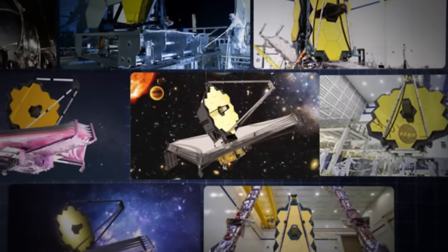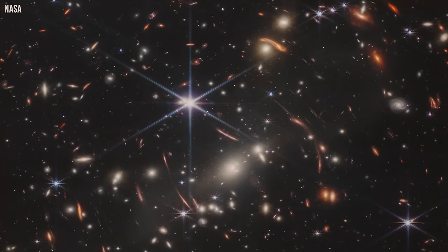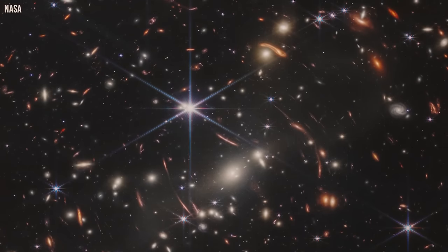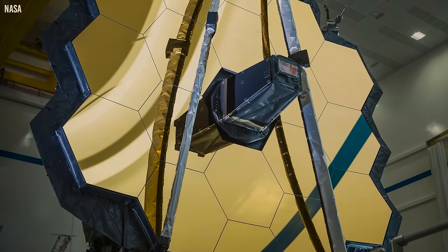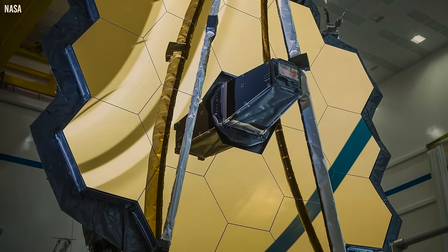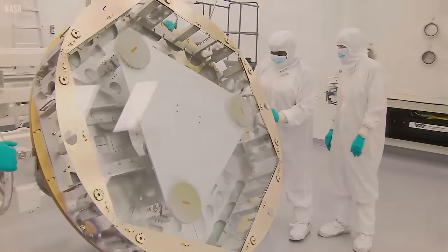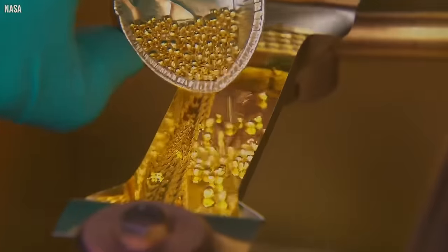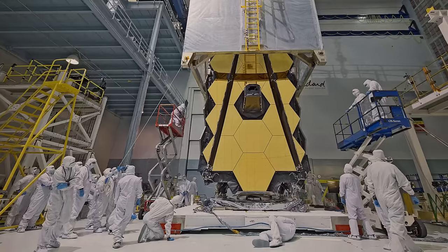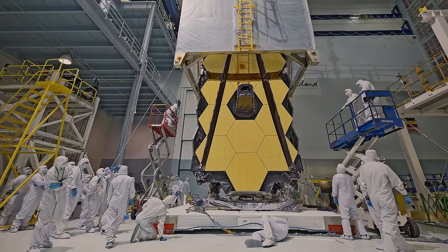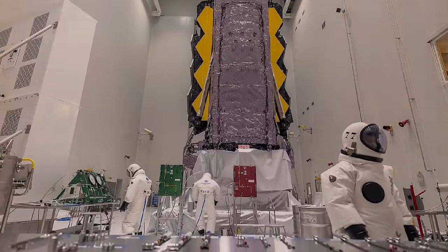The journey to the James Webb Telescope started with a bold vision to push the boundaries of space exploration and expand our understanding of the universe. It was conceived as the successor to the iconic Hubble Space Telescope. Drawing inspiration from the successes and challenges of previous space missions, the JWST was designed to overcome the limitations of its predecessors and pave the way for groundbreaking discoveries in astronomy and astrophysics. After years of meticulous planning, development and testing, the telescope was ready to be launched.